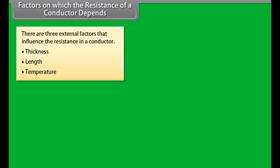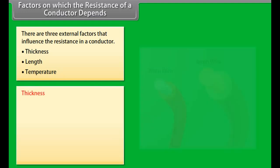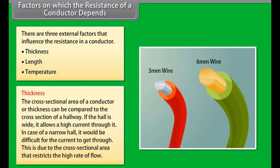Ohm's Law deals with the relationship between voltage and current. It states that the current through a conductor between two points is directly proportional to the potential difference across the two points.